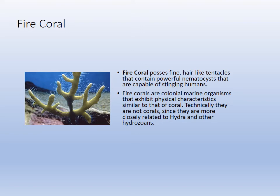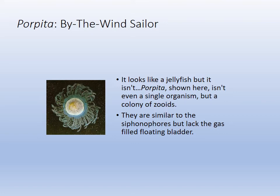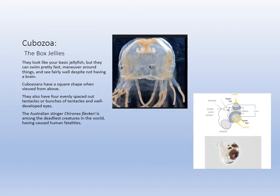Siphonophores are colonial cnidaria made of different types of cells called zooids — they're modified polyps. Fire coral has very long nematocysts that give you big welts. The by-the-wind sailor is another siphonophore — a colony of zooids. The Cubozoa, the box jellyfish, is one of the most poisonous organisms in the world, living in Australia. It has the simplest eye in the animal kingdom — an actual organ, whereas most in this phylum operate only at the tissue level with nerve nets.